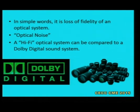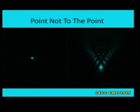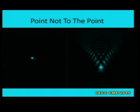A hi-fi optical system can be compared to a digital Dolby sound system. In other words, we can say that a point is not to the point. If a point source of light is not imaged as a point source of light, that means there is an aberration. So, a point not to the point is the aberration.